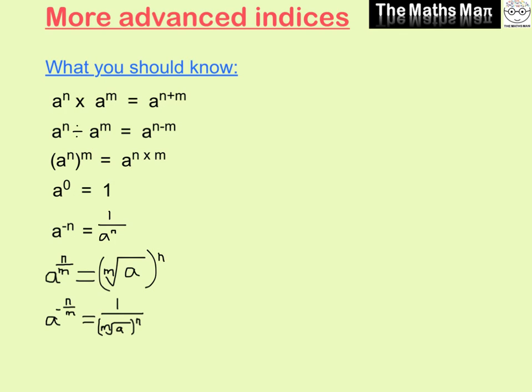This is what you should already know: when multiplying indices we add the powers; when dividing indices we subtract the powers; with brackets we multiply the powers. Anything to the power of 0 equals 1. A negative index means a fraction — 1 over a to the power of n. A fractional index means the mth root with a power of n outside, and when it's negative we put it as a fraction: 1 over.